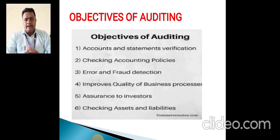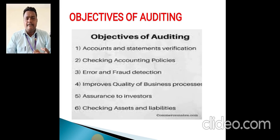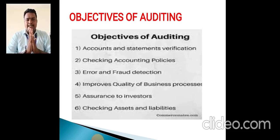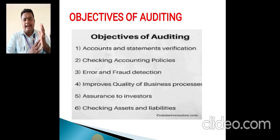Auditing has a lot of objectives. The first one is accounts and statement verification. The second is checking and accounting policies. Then, to identify errors and fraud detection. Next, improve the quality of business processes. Then, assurance to investors. Also, checking assets and liabilities. Once the auditor is involved in the auditing process, they have to thoroughly check all basic and supporting documents like cash books, ledgers, and all transaction books.